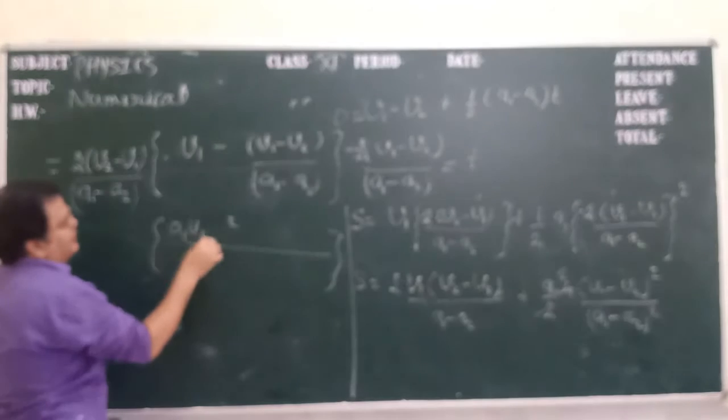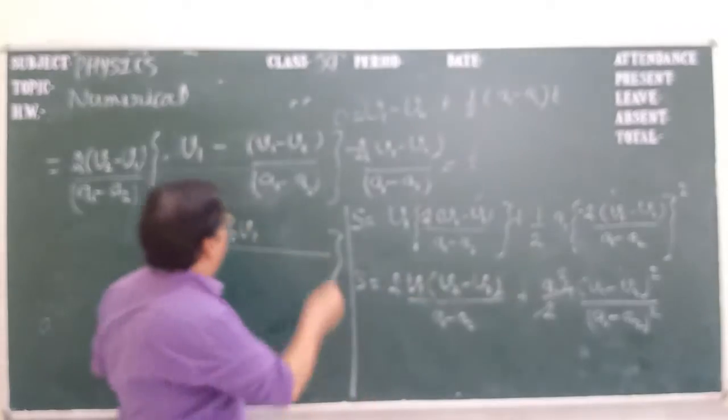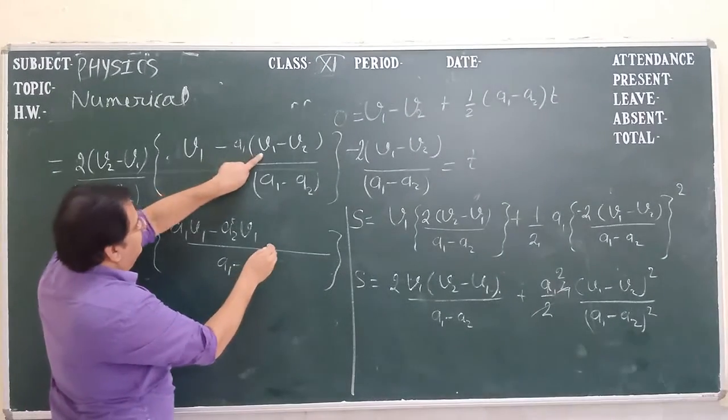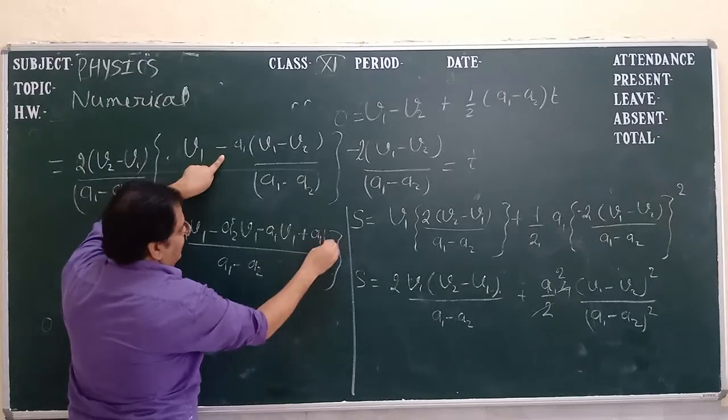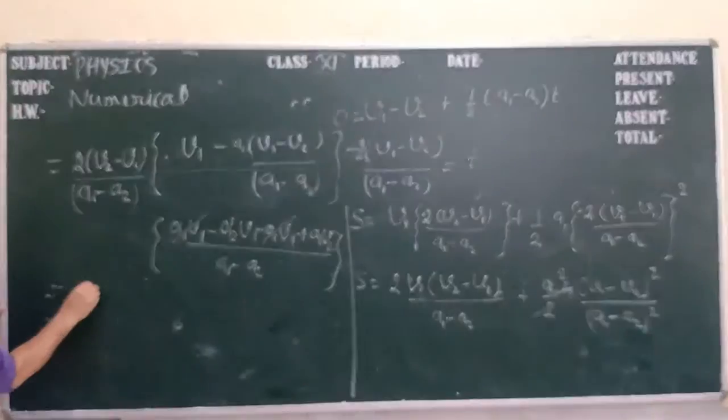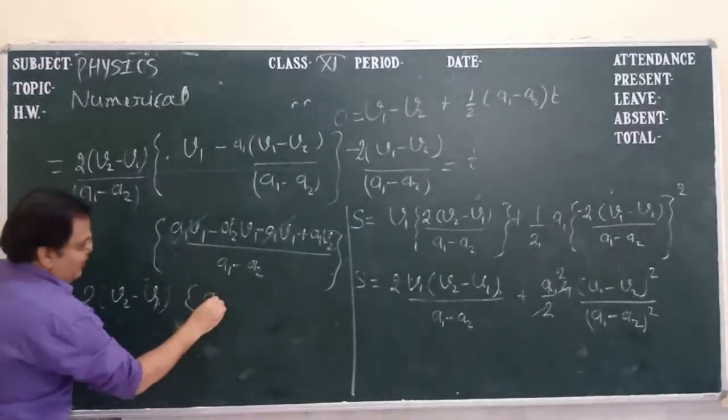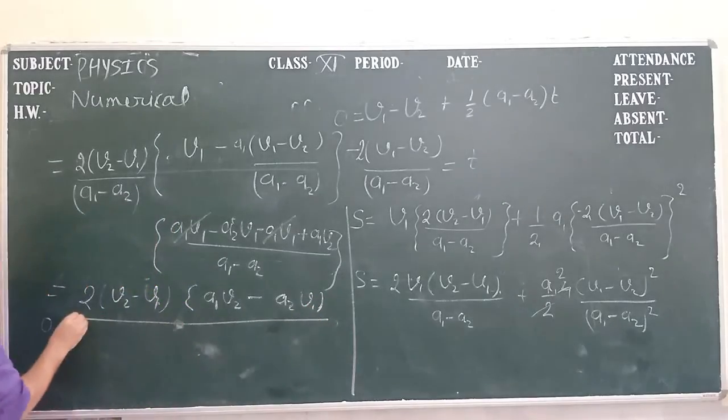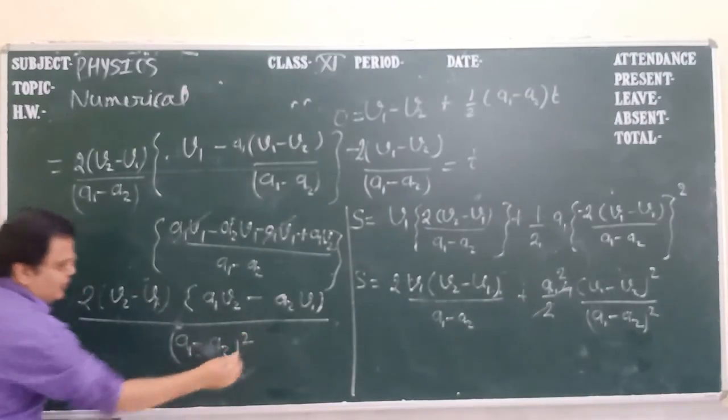Now taking the LCM, a1v1 minus a2v1. We get upon a1 minus a2. Just multiply it: a1v1 minus plus a1v2. Here is a1v1, we cut it out, and we get 2 into v2 minus v1 into a1v2 minus a2v1 upon a1 minus a2 whole square.